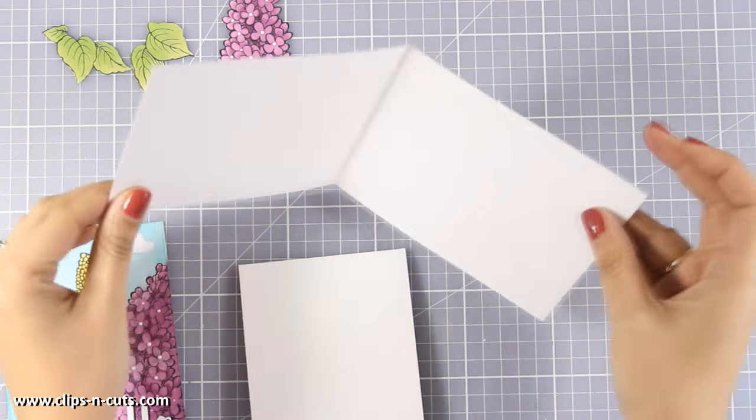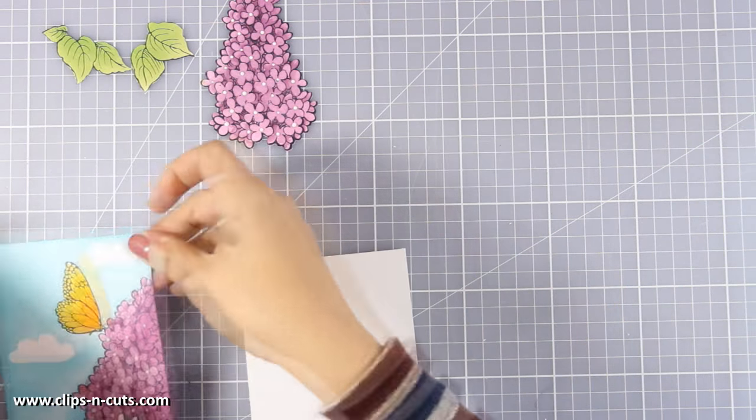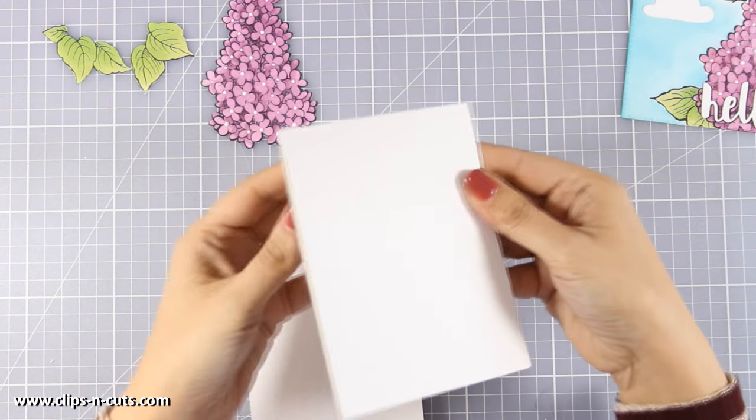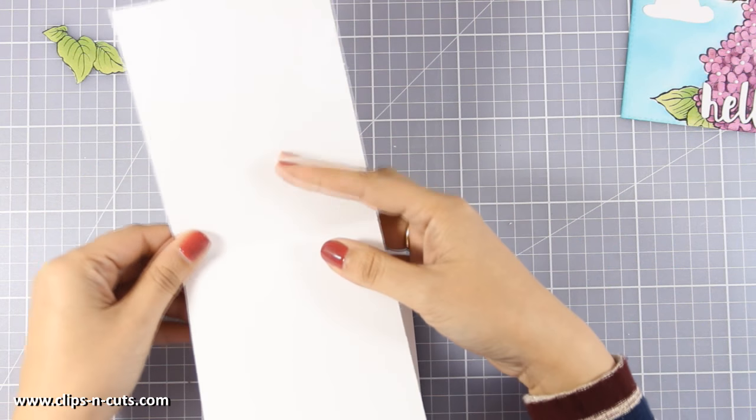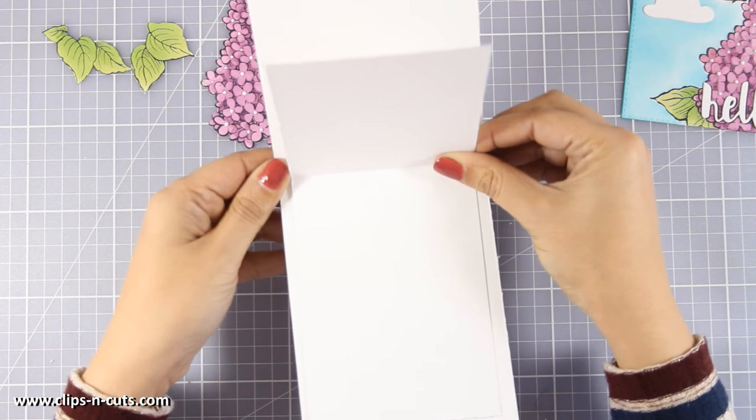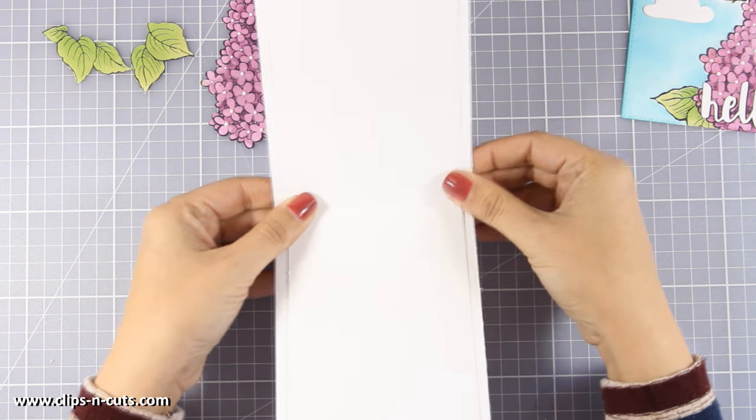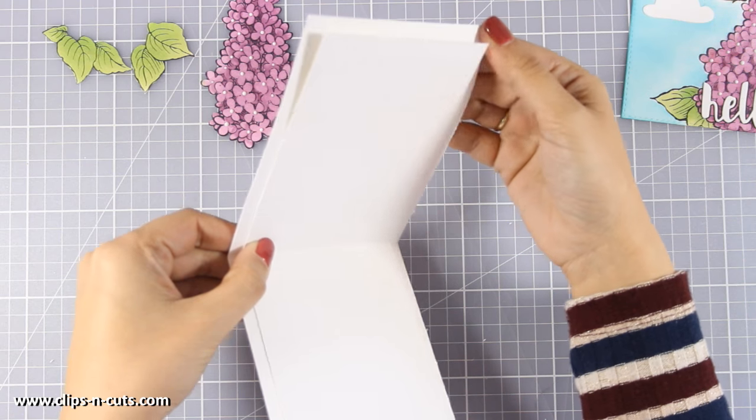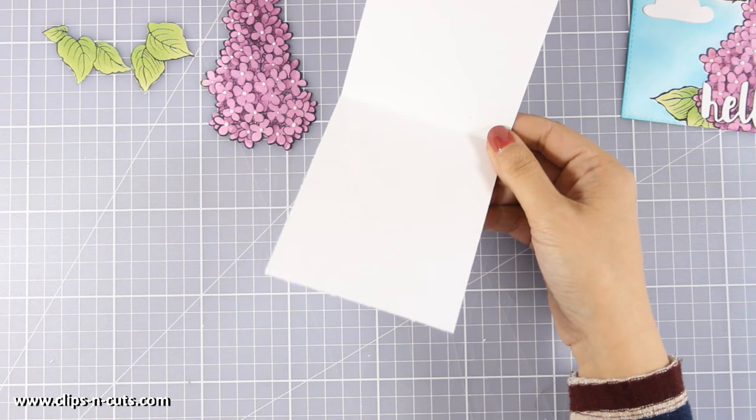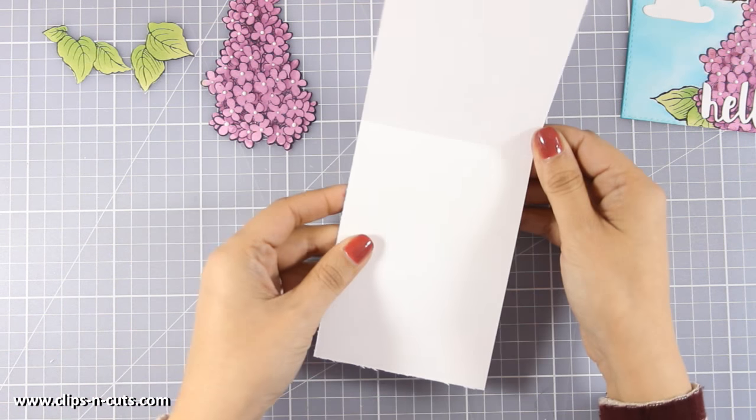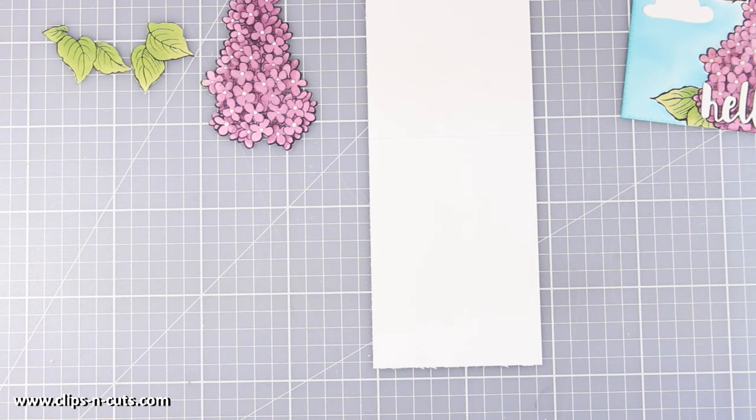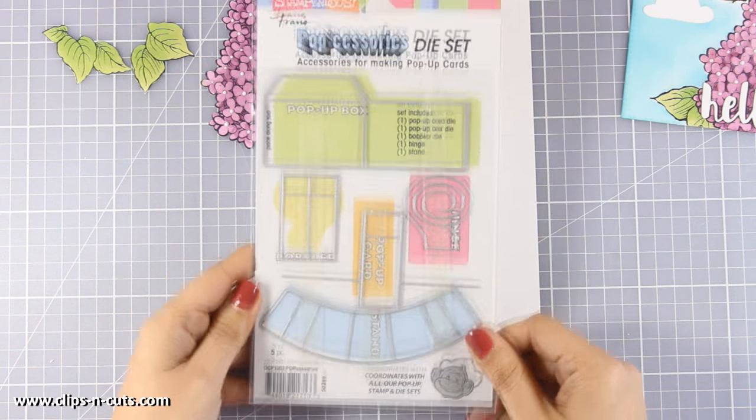So this is my card base that is a standard card that is 4.25 by 5.5 and I have cut out another one for the inside that is slightly smaller just to create a border. Of course you can use any color for the inside you can use blue to be your sky at the top or green at the bottom to be your grass but I decided to go plain. I have already scored and folded that but you don't really need to do that.